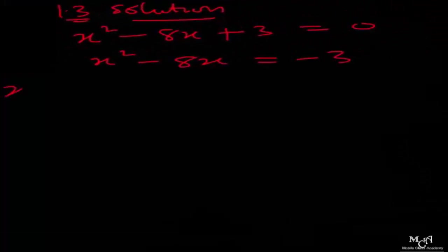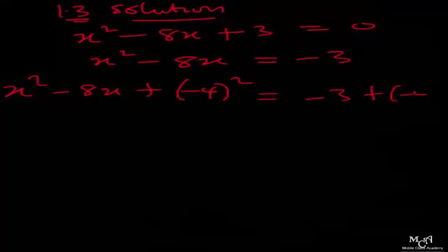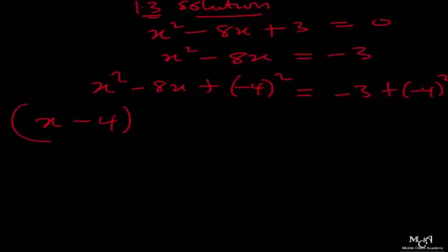So you have x squared minus 8x plus (minus 4) squared equal to minus 3 plus (minus 4) squared. Whatever you do to the right-hand side you do to the left-hand side. From here, x squared minus 8x plus (minus 4) squared is the same thing as x minus 4, all squared.